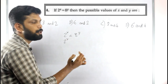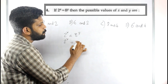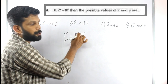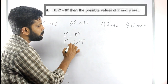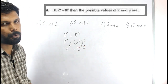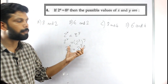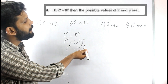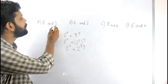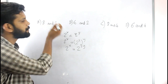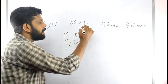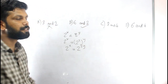We rewrite 8 as 2 raised to 3, so 8 raised to y becomes 2 raised to 3y. Therefore 2 raised to x equals 2 raised to 3y, which means x is equal to 3y. That is the right answer.